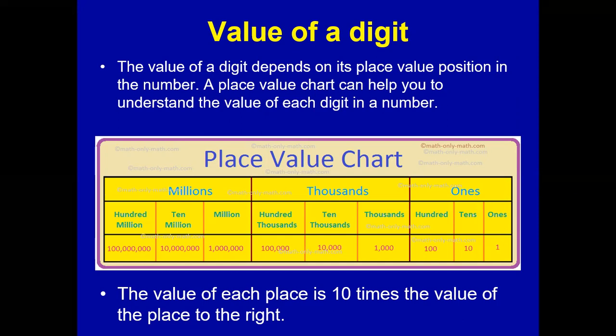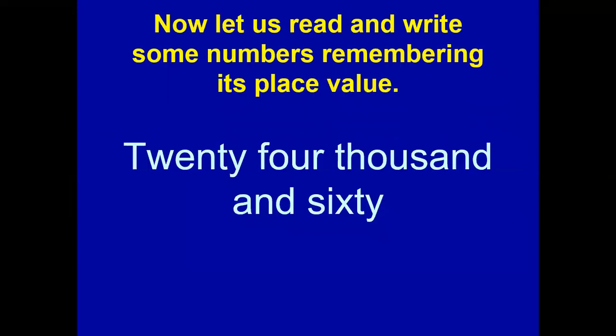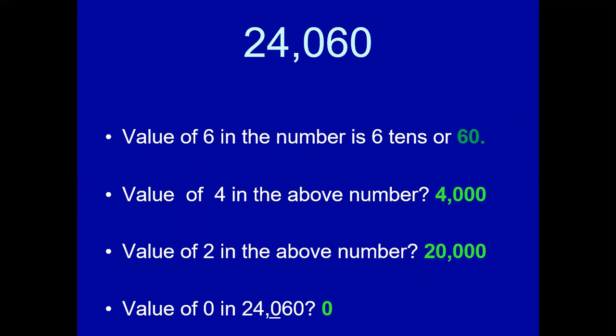Now let us learn to read and write some big numbers. You have to remember the place value before you read and write a number. The number 'twenty-four thousand and sixty' is given in word form — how will you write it in standard form? It is 24,060. There are zeros in the ones place and hundreds place because there is no digit in those positions.